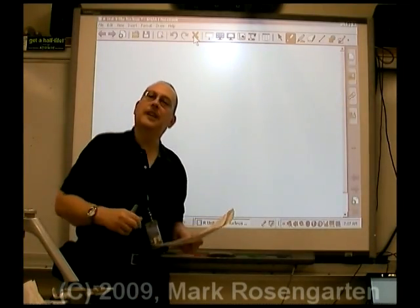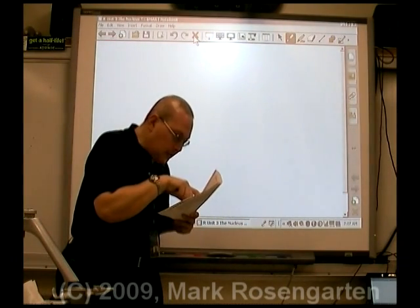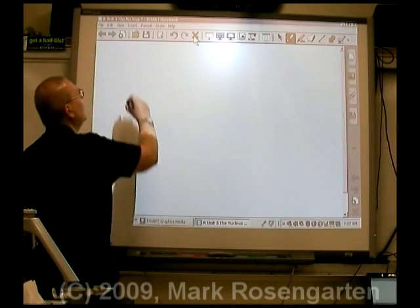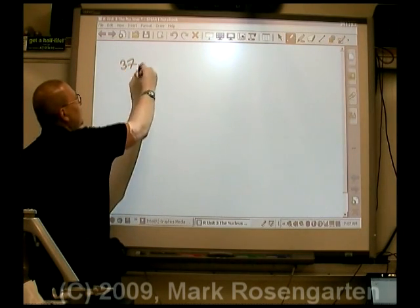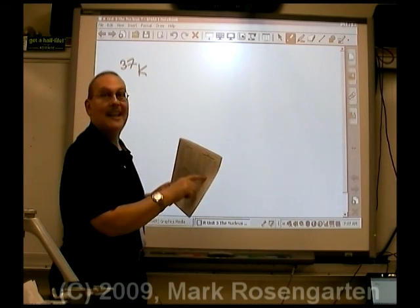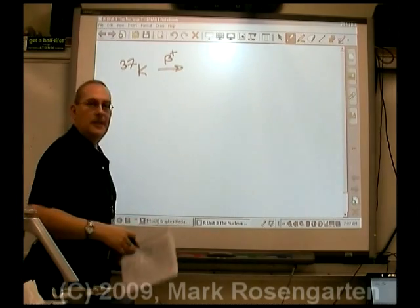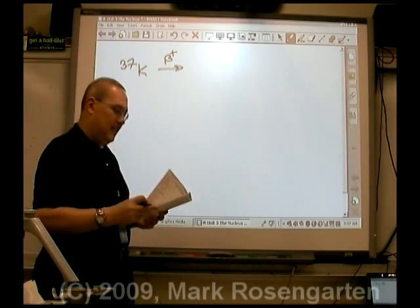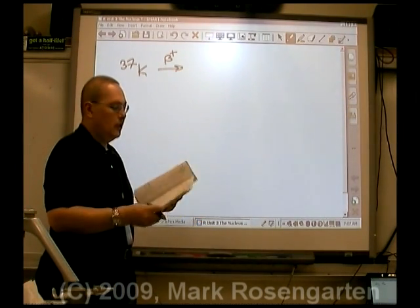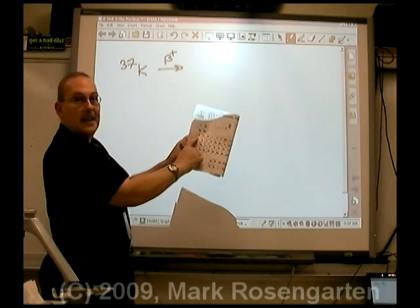Let's try a different decay off this reference table. It looks like we've got K-37, potassium-37. And according to this, potassium-37 undergoes beta positive decay. We need to find the atomic number of potassium. So for that, we just go to the periodic table. K-19.